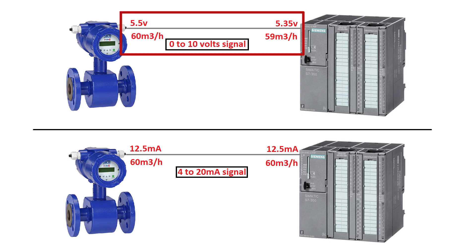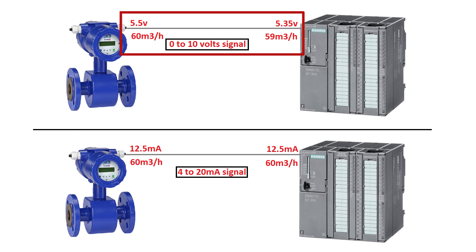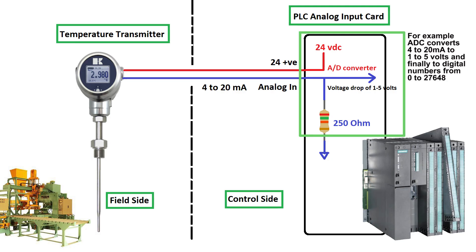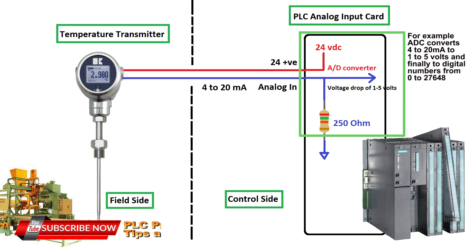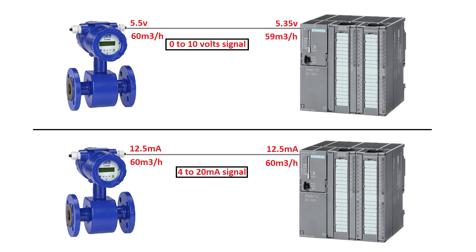The second reason is electromagnetic interference: current signals are more robust against noise from electromagnetic interference. Third, this system can detect an open circuit, whereas in a 0 to 10 volt signal, a reading of 0 voltage is the minimum reading.